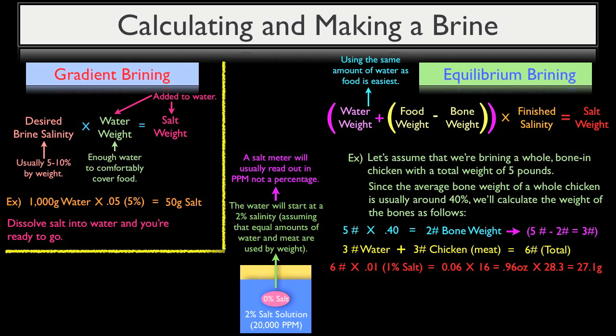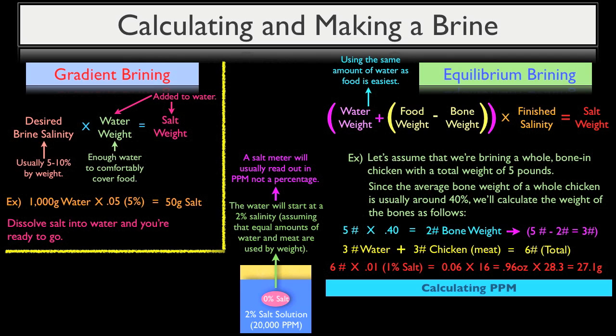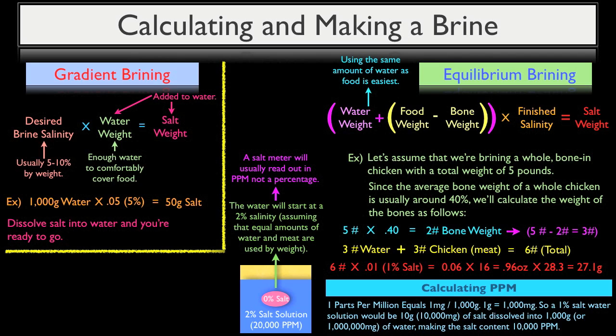So to calculate, basically 1 part per million is going to equal 1 milligram per 1,000 grams. Now, since 1 gram is equal to 1,000 milligrams, a 1% salt solution could be viewed as this. So 10 grams or 10,000 milligrams of salt dissolved into 1,000 grams or 1 million milligrams of water is going to make a 1% salt concentration read out as 10,000 parts per million on a salinity meter.